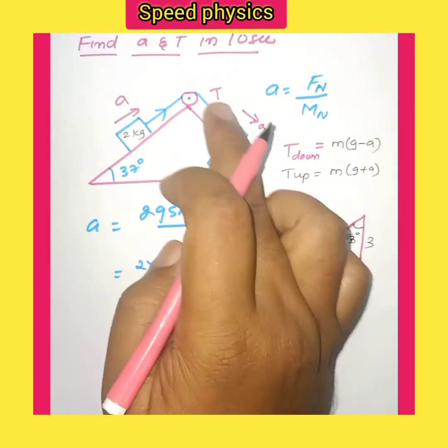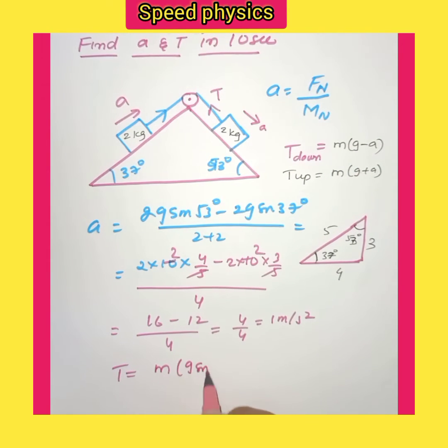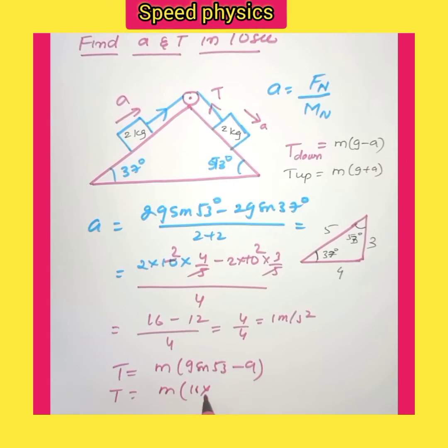This can be taken as m times g sin 53° minus a, considering the component present here. So T equals m times 10 times sin 53°, which is 4/5.